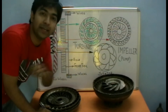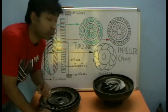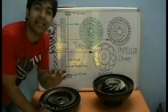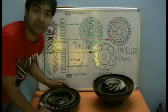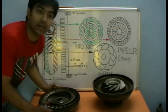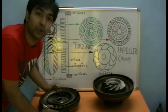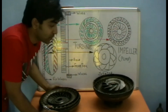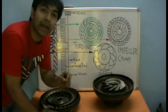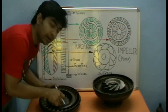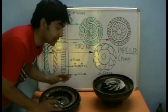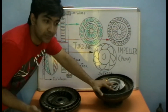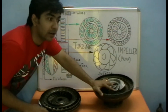Today we will be talking about how torque multiplication happens. The working of the torque converter has already been explained in my last video on the Tetrix Info channel on YouTube — this is the continuation of that video. Torque multiplication only happens when the speed of the turbine of the torque converter is lesser than the speed of the impeller.